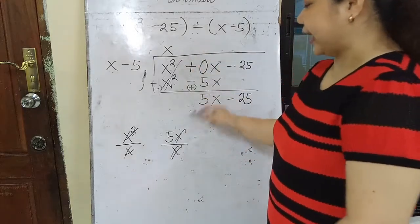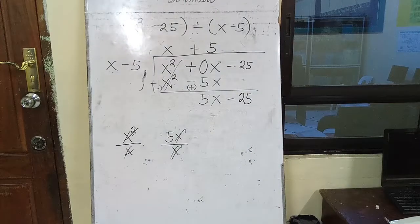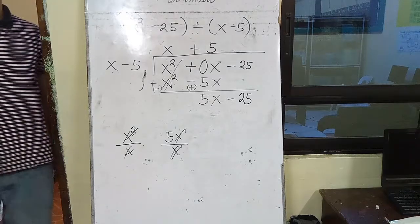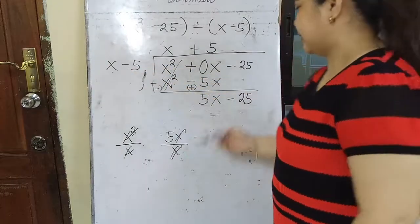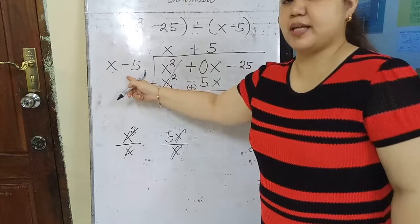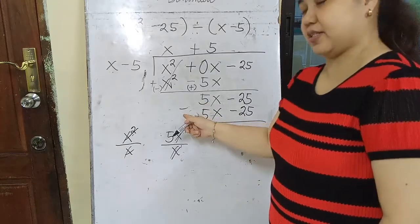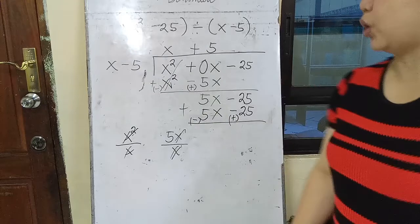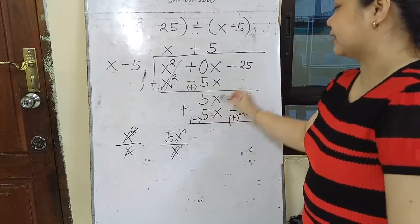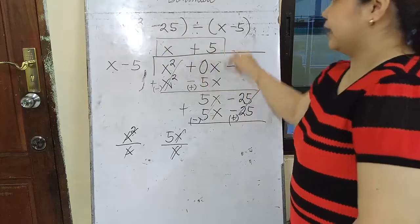So positive 5x is the next quotient term. Multiply: positive 5 times x is 5x, and 5 times negative 5 is negative 25. Then change the sign of the subtrahend. Positive 5x plus negative 5x is cancelled. Negative 25 plus positive 25 is 0. No remainder. The answer is x plus 5.